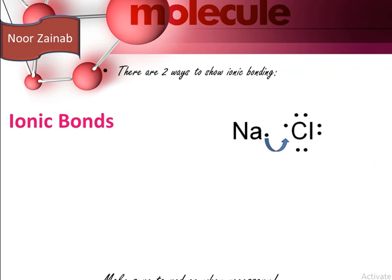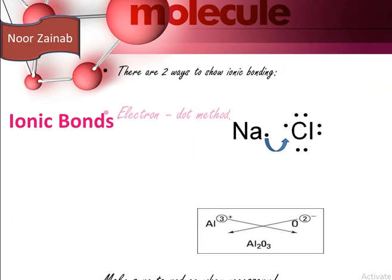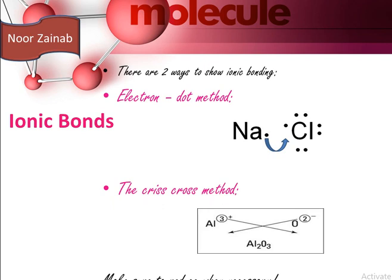There are basically two ways to show ionic bonding. The first way is the electron dot method, in which valence electrons are shown by dots. For example, sodium contains one valence electron so only one dot is shown, whereas chlorine contains seven valence electrons so seven dots are shown. The second method is the crisscross method, where the charges on the ions are arranged in a crisscross way — for example, Al has a plus three charge and O has a minus two charge.